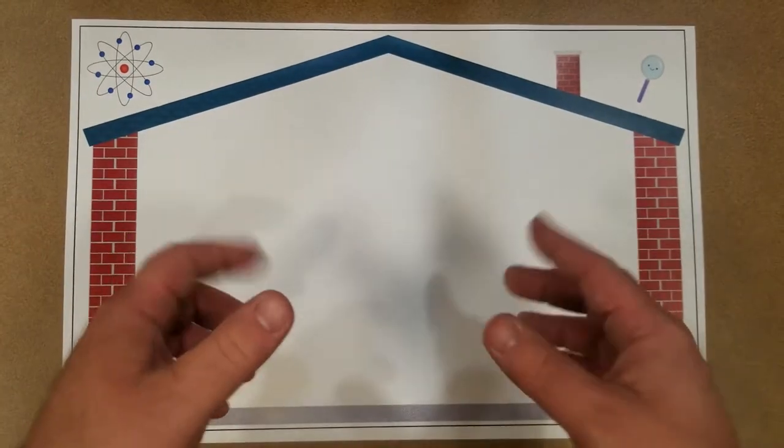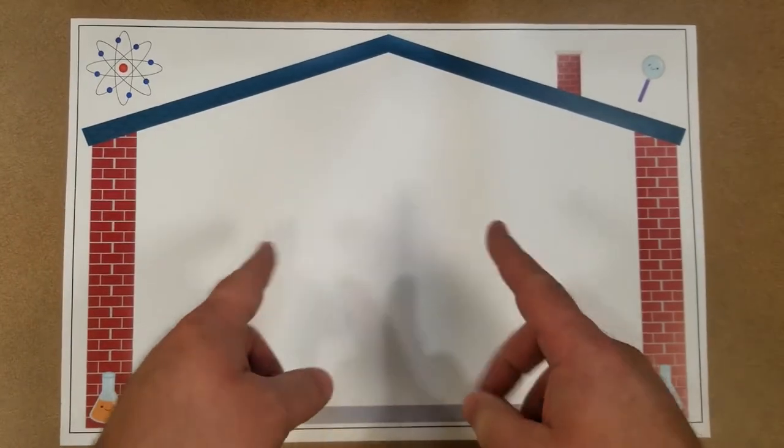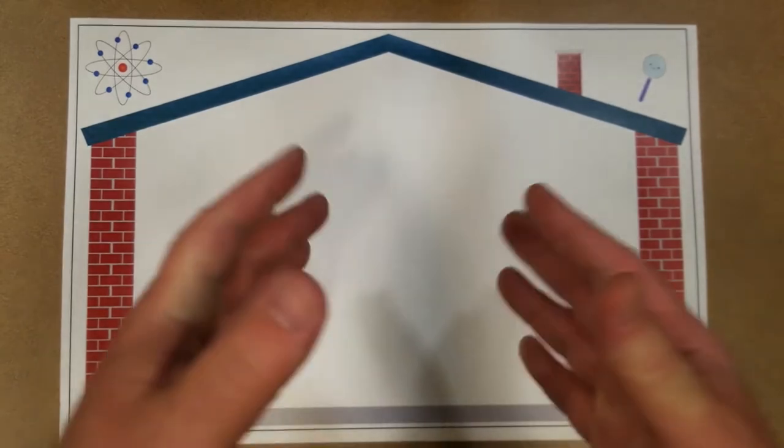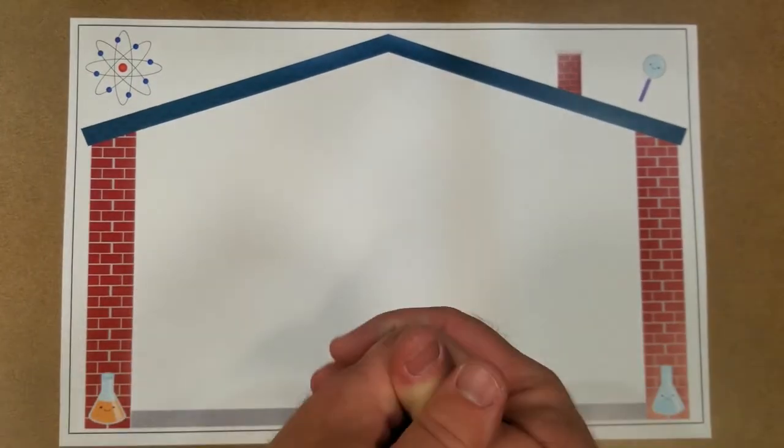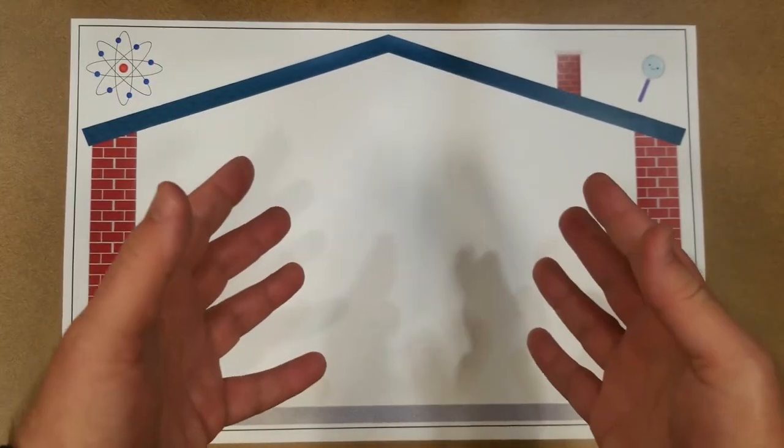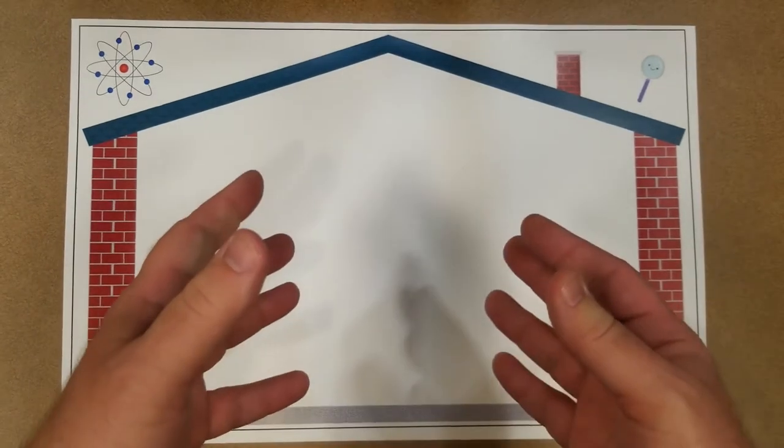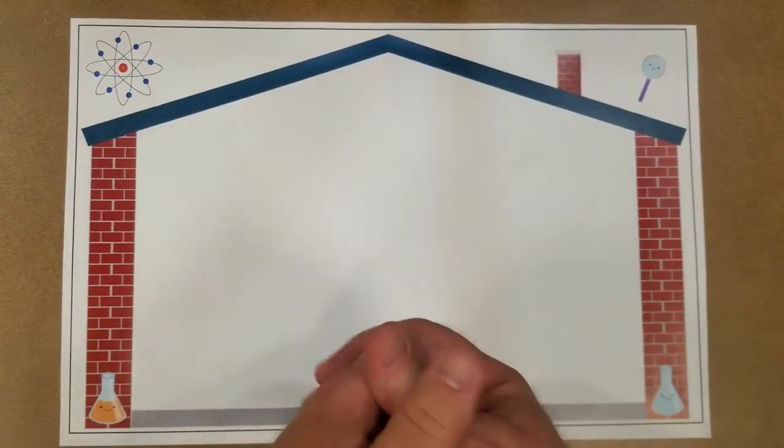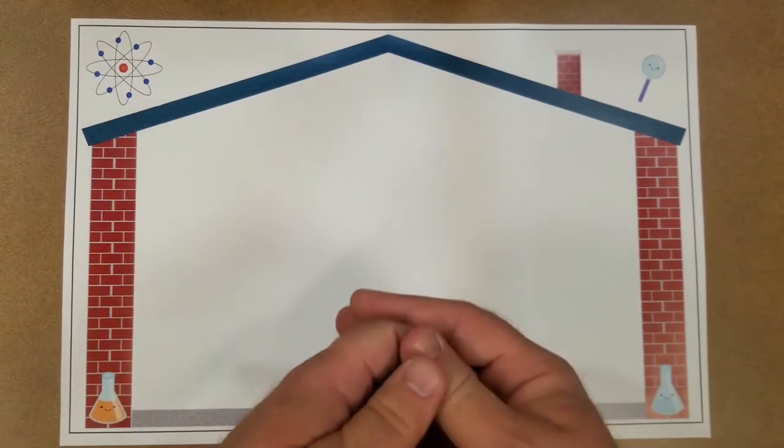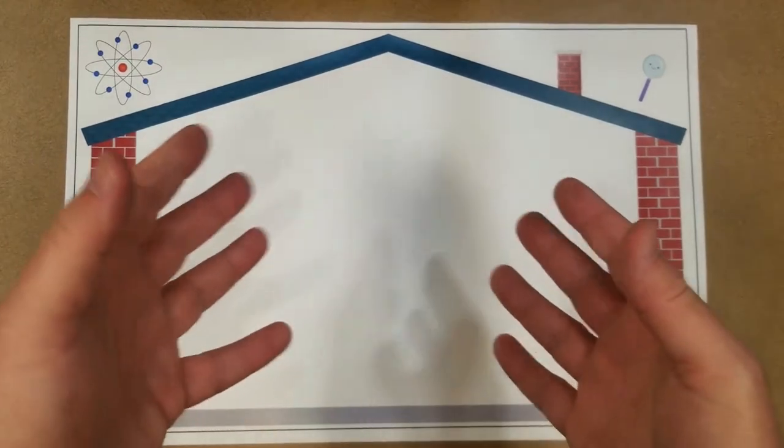Hello everyone, Mr. Brian here, and I'm here with another try this at home science activity. Today, what we're going to be doing is making a maraca, and we're going to be using materials that should be easy to come by, especially at the time of year which I'm filming this, which is in March of 2021.